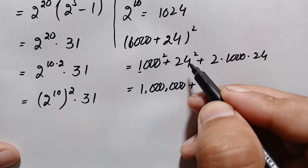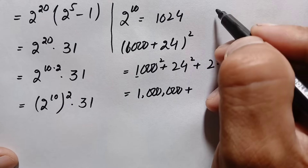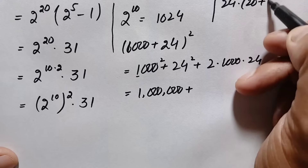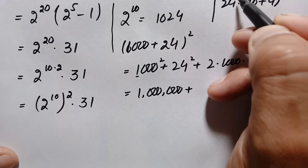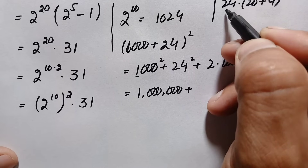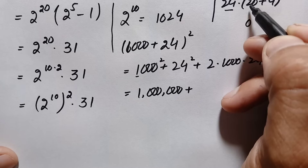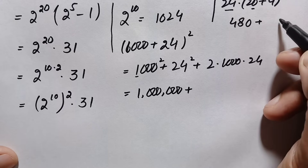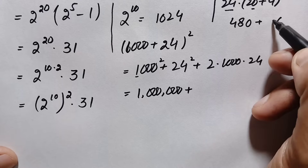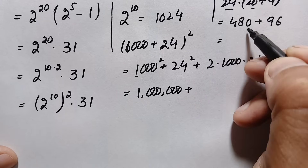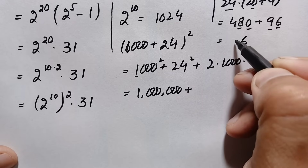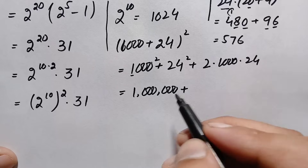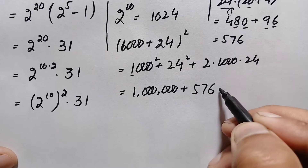Next, 24 squared: we multiply 24 by 24, writing the second 24 as (20 + 4). 24 times 20 is 480. 24 times 4: 4 times 4 is 16, write 6 carry 1; 4 times 2 is 8 plus 1 is 9, giving 96. Adding 480 plus 96: 0 plus 6 is 6, 8 plus 9 is 17 so 7 carry 1, 4 plus 1 is 5. So 24 squared equals 576.